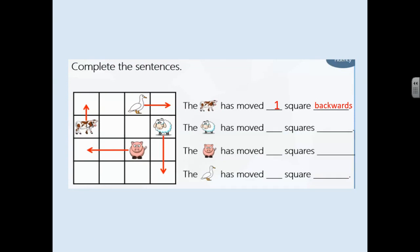The sheep has moved two steps, two squares forwards. The pig has moved two squares to the left. And the duck has moved one square forwards.